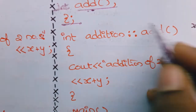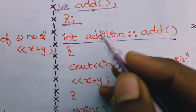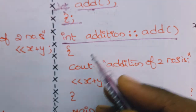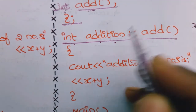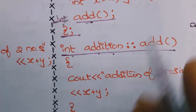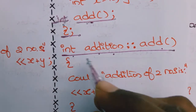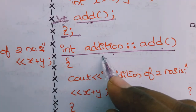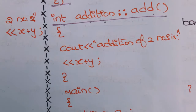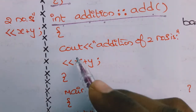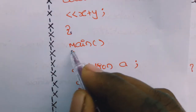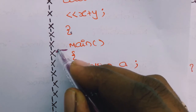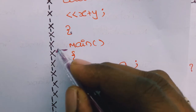When you write the function body outside the class, you follow this syntax: return_type, then class_name, then scope resolution operator (::), then function_name. The return type here is int — if you don't mention it, it defaults to int. So: int addition::add, then open the brace, write cout with 'Addition of two numbers is' and x + y, then close the brace.